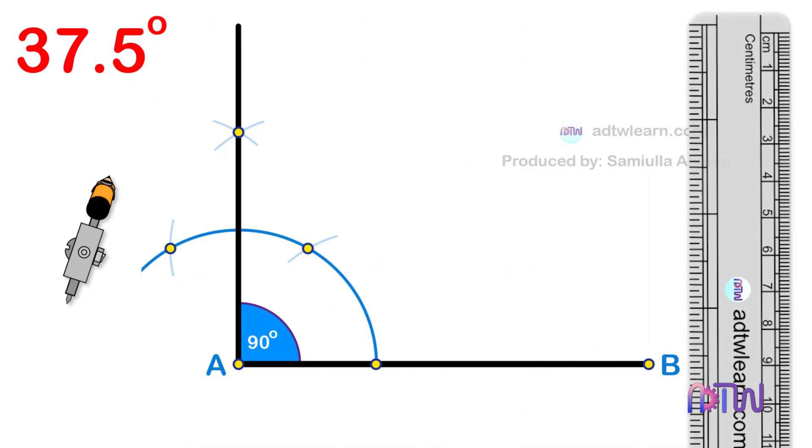This angle will be 90 degrees. Now we can construct a 75 degree angle. Here, look closely. The angle made by this arc from here to here is 60 degrees. Similarly, the angle made by this arc is also 60 degrees. Half of this will be 30 degrees. Therefore, this total angle is 90 degrees.